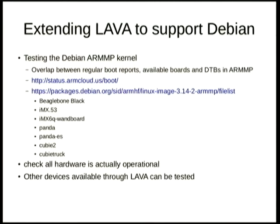Now we're reaching out to Debian. We've been using Ubuntu to run the infrastructure for a while, and we've now got it all migrated over to Debian — all the packages are in Debian and we're running them as they are in Debian. We are looking to test the ARM MP kernel. We're looking at the overlap between boot reports we can access, the available boards in LAVA, and the DTBs defined in the ARM MP kernel. That's a summary of the boards we've found so far that can easily be tested for the ARM MP kernel.